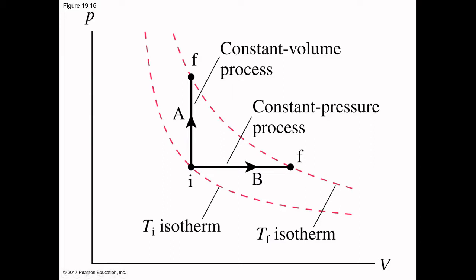The higher the temperature, the faster those particles are zipping around on average, which means the greater their total kinetic energy. We don't have to worry about potential energy. There are two ways shown here for getting from the lower temperature isotherm to the higher energy isotherm. The state includes the values of all state variables — the pressure and volume here are different from there, so they're two different states, but they share the same total energy and same temperature.